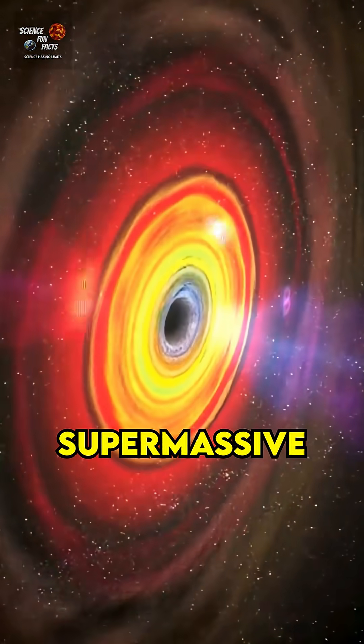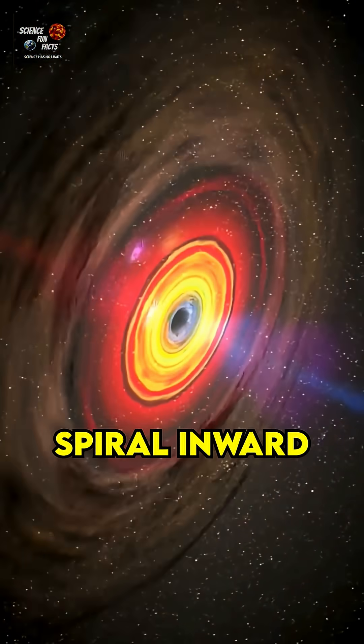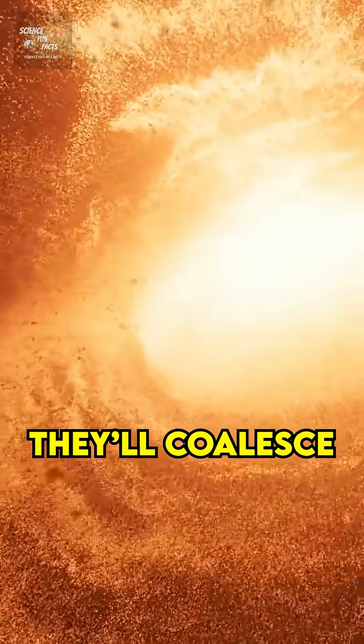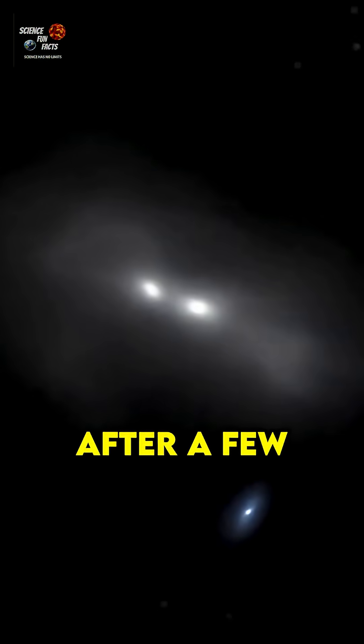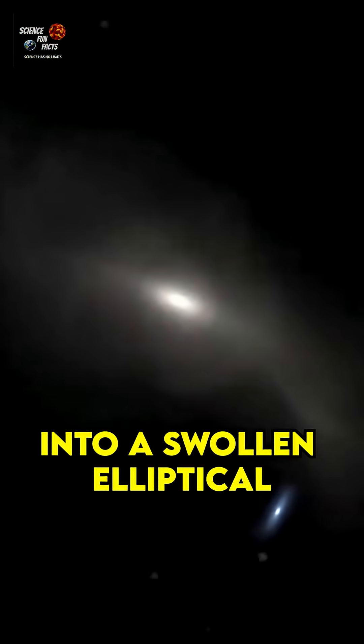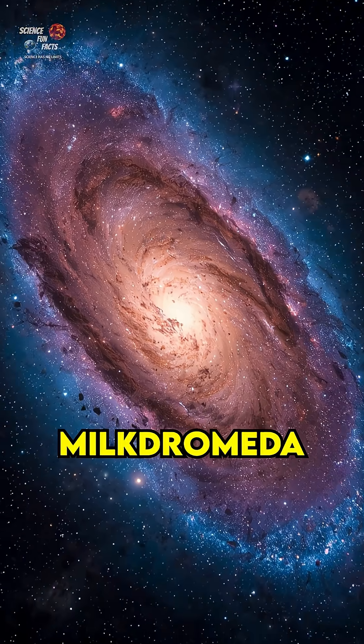At each center, supermassive black holes spiral inward. If the galaxies truly merge, they'll coalesce and ring space-time with gravitational waves. After a few wild swings, the system can settle into a swollen elliptical that fans call Milkdromeda.